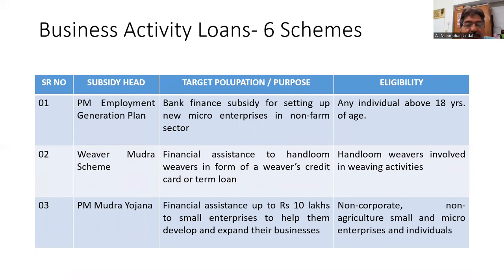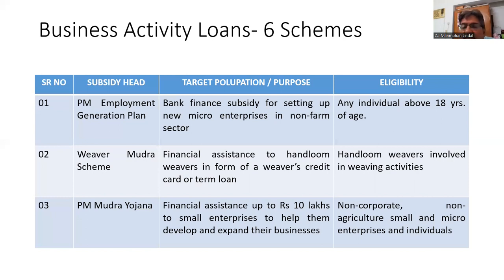The Weaver MUDRA scheme provides financial assistance to handloom weavers in the form of a weavers credit card and term loan, for those involved in weaving activities. The PM MUDRA scheme provides financial assistance of up to Rs. 10 lakh to small enterprises to help them develop and expand their business. It is available to non-corporate, non-agriculture, small and micro-enterprises and individuals — it is not available to corporates.